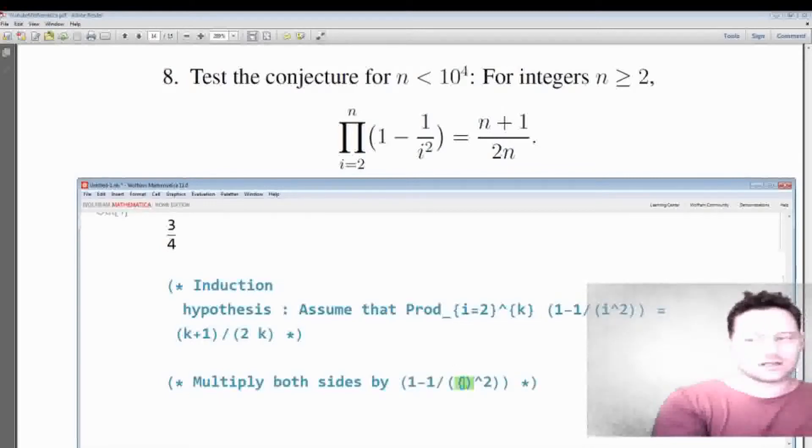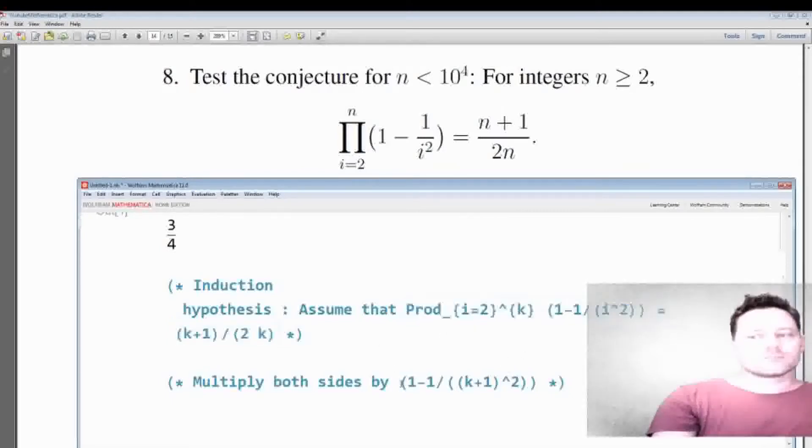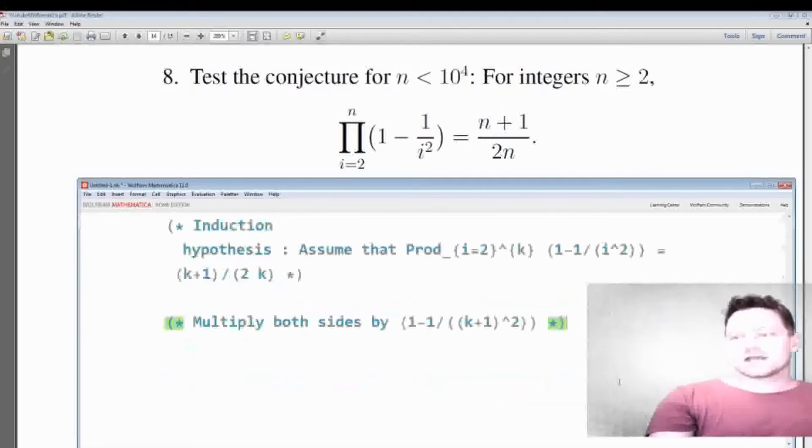Okay, so I'm going to multiply both sides of this induction hypothesis formula by this, where we have k plus 1 in the place of i. Okay, now I can go back to doing an actual calculation.